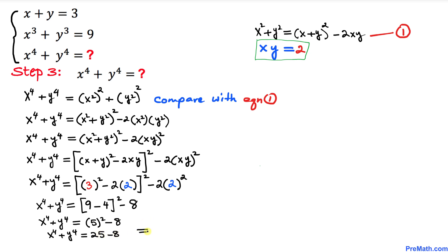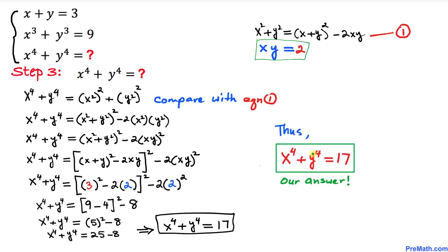Therefore x to the power 4 plus y to the power 4 equals 17. That's our final answer. Thanks for watching and please don't forget to subscribe to my channel for more exciting videos.